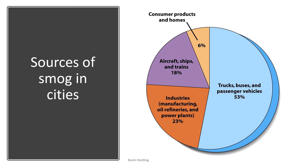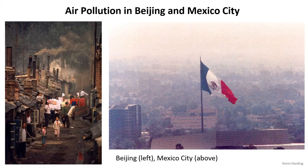In Johannesburg there are not many ships or trains, so those contributions are lower. Consumer products and home burning form a very small percentage of smog. Johannesburg is not the only city with photochemical smog — Cape Town also has it, and cities like Beijing and Mexico City show extreme examples where you can barely see the horizon.